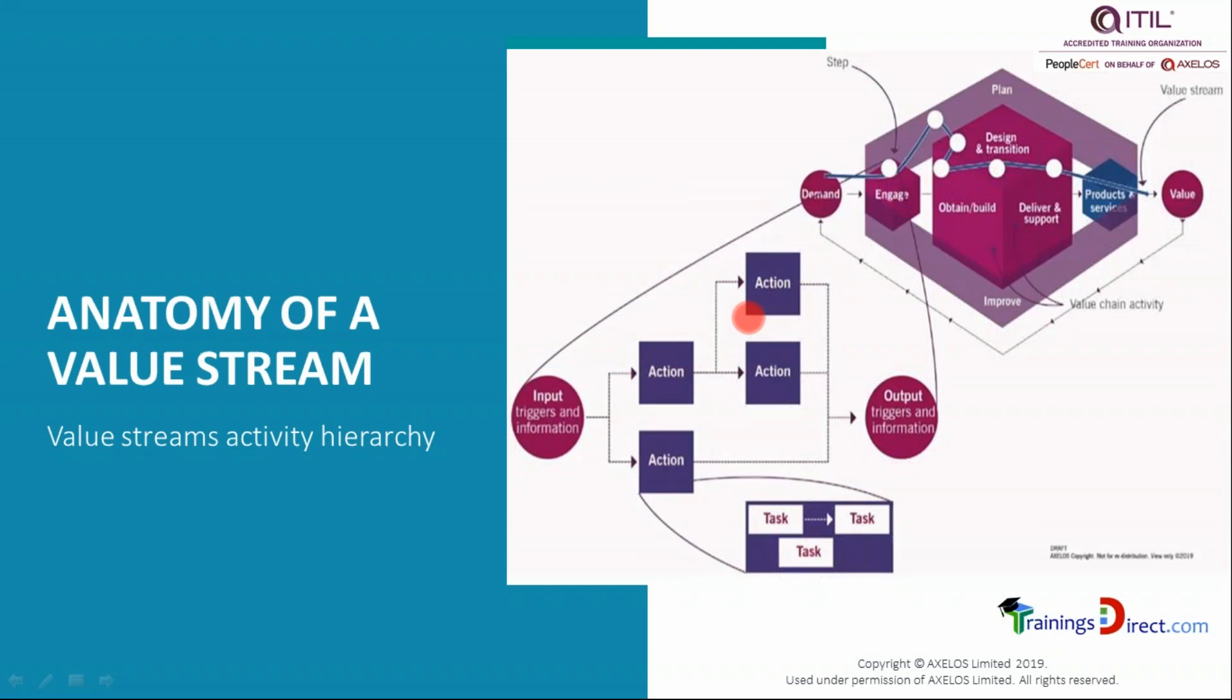If the organization wishes not to go into so much depth, they can stop at a step level. But if they want to make it better, they may break it into actions. Normally, it's very rare that a value stream would not be shown without actions within a step. However, showing the tasks within the actions is probably more difficult, so some organizations may decide not to go to the task level.